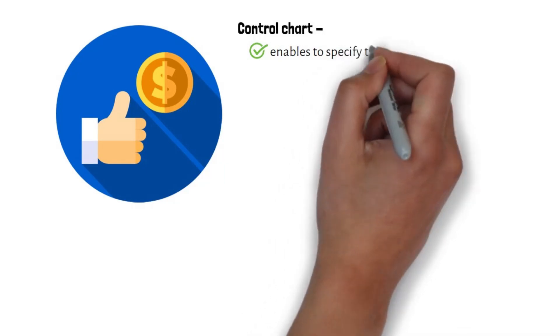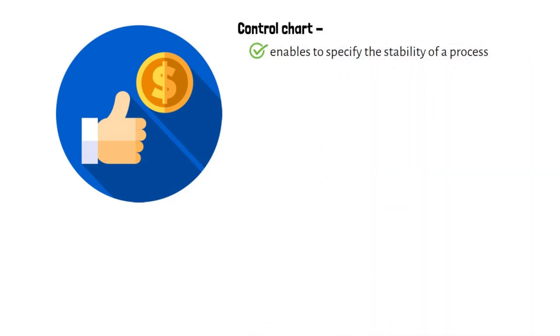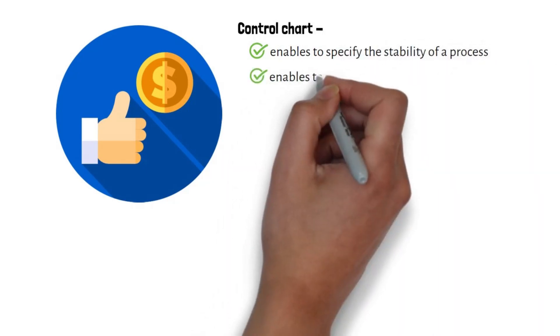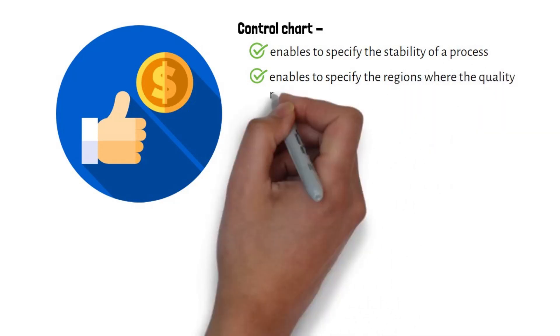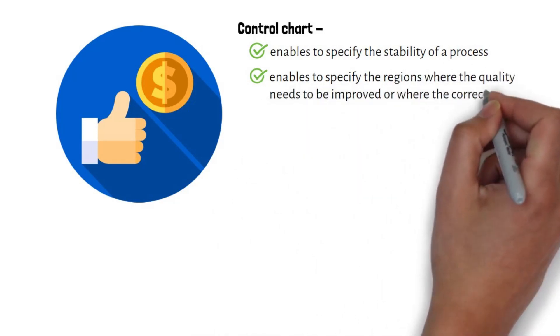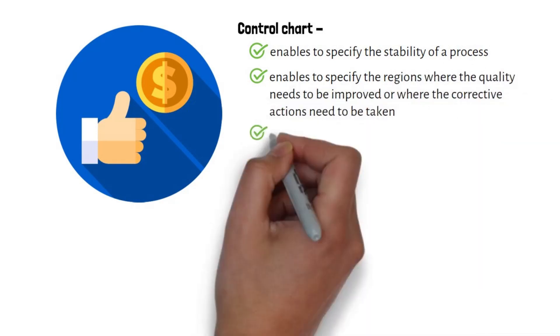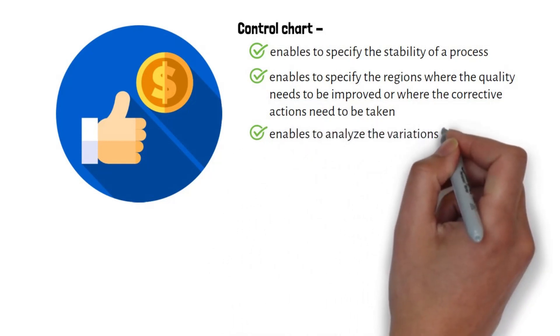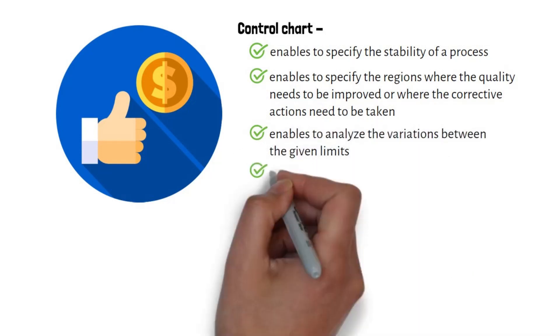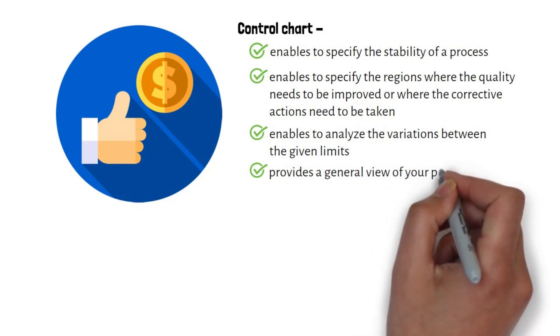Benefits of control chart: it enables you to specify the stability of a process, it enables you to specify the regions where the quality needs to be improved or where corrective actions need to be taken, it enables you to analyze the variations between the given limits, and it provides a general view of your process on a single chart.